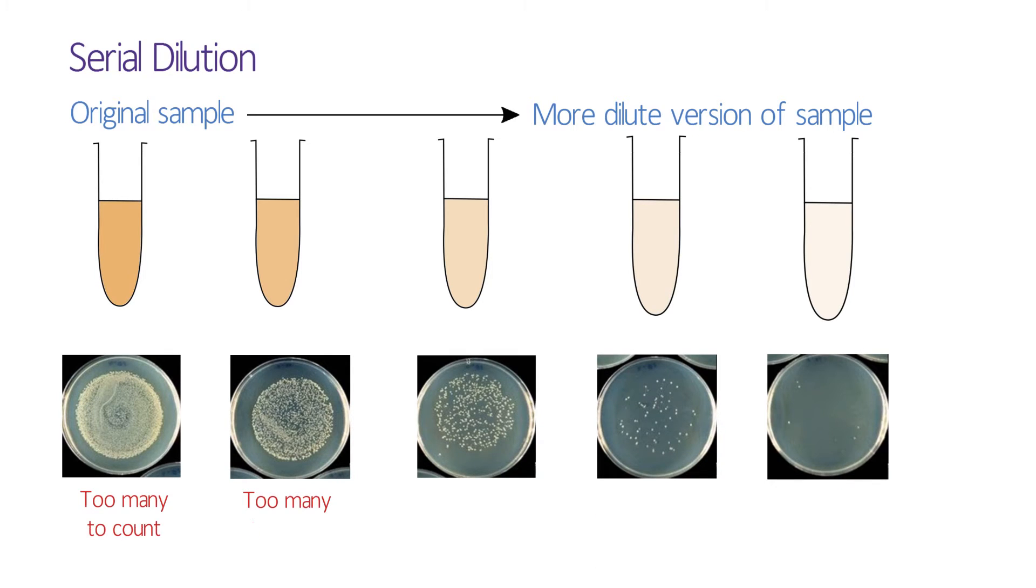Then hopefully one of those plates will have between 20 and 100 colonies, which is a good number to count. We can then work out from the system how many colony-forming units were present in the original sample.